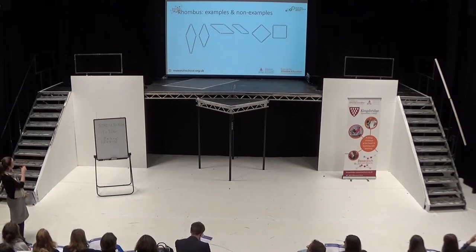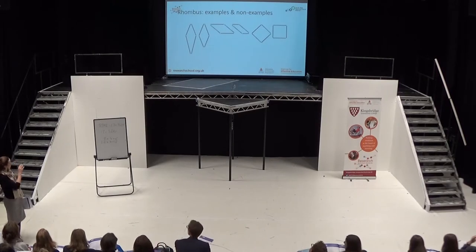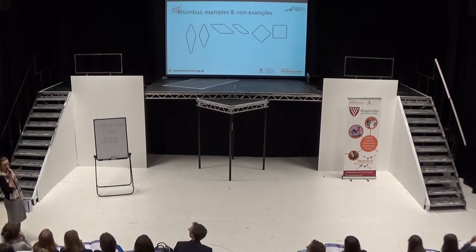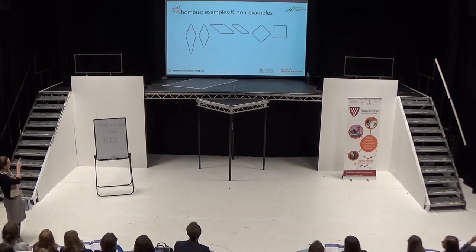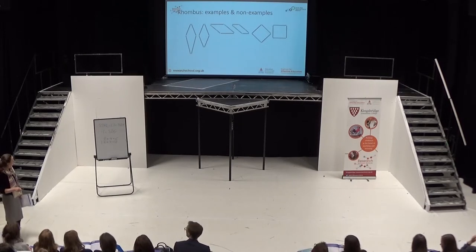As children started to understand a little bit more about the characteristics of a rhombus, they then looked at the third and fourth shapes — both quadrilaterals again. The teacher said the left-hand shape is a rhombus but the right-hand shape is not, they talked about those, and then asked the children if they wanted to refine their votes for the final two shapes. So my question to you is: what do you think the children said about the final two shapes — were they rhombuses or not?